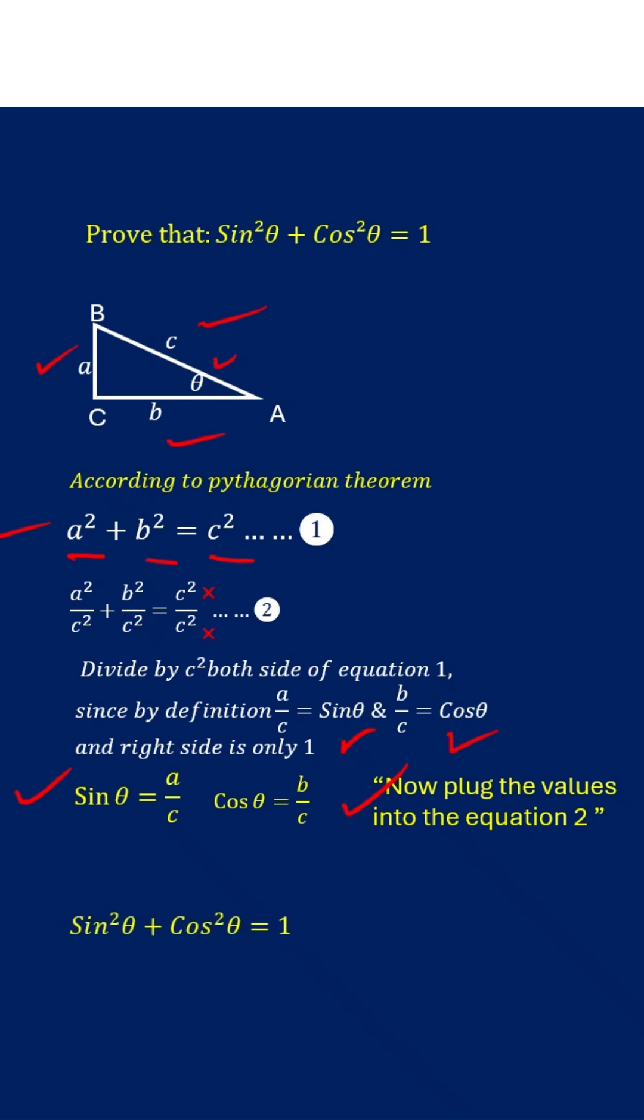Sin²θ + cos²θ = 1. Hence proved this identity sin²θ + cos²θ. Thank you.